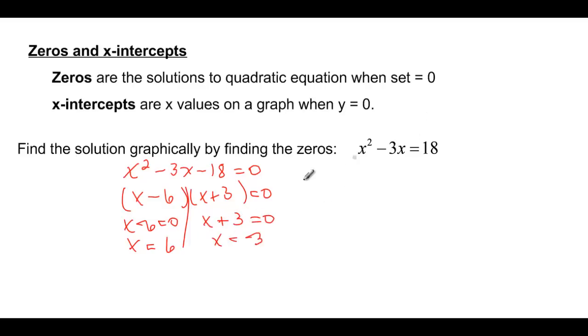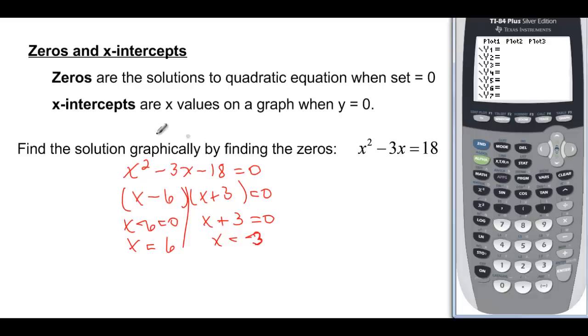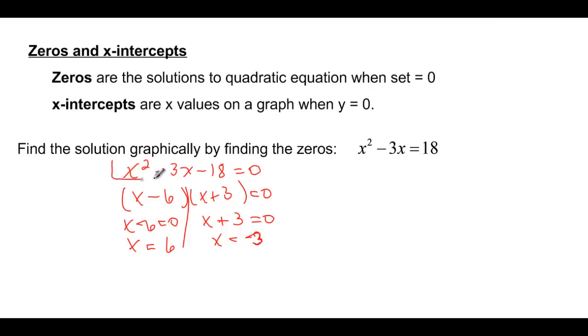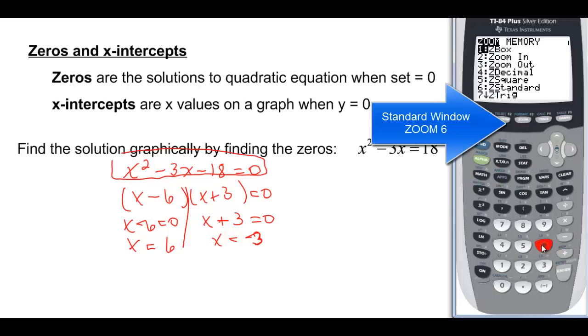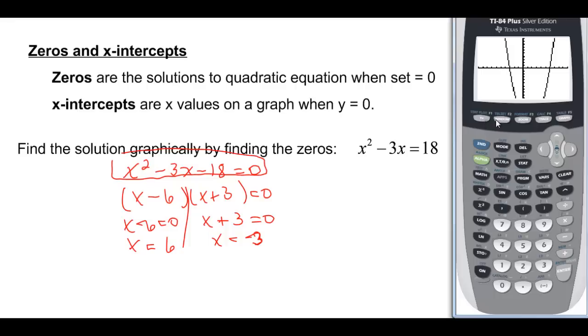Now let's see if we get the same values. If we graph, if we want to find the x-intercepts or the zeros, we need to use this equation in our calculator. Put in x squared minus 3x minus 18, and then we want a standard window because this is a simple graph. We need to do second trace, and we just want to find the zeros, so hit 2.